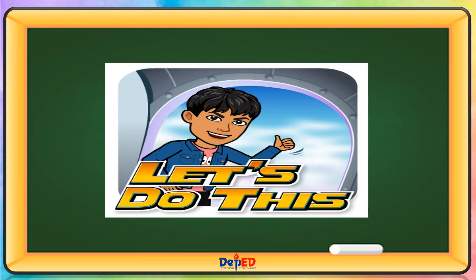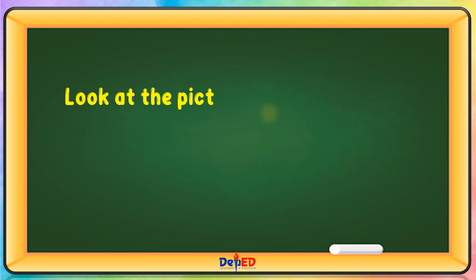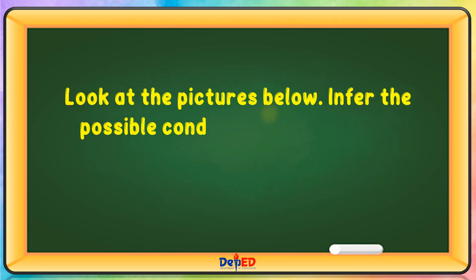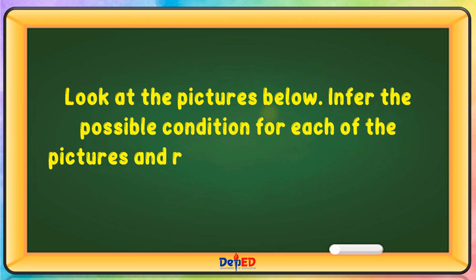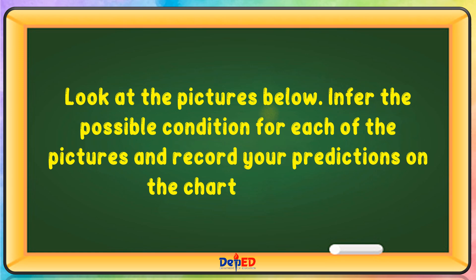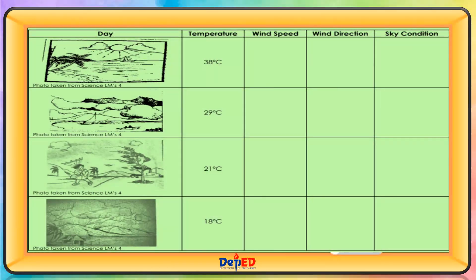Let's do this. Look at the pictures below. Infer the possible condition for each of the pictures and record your predictions on the chart provided. Day 1: temperature, 38 degrees Celsius; wind speed, gentle; wind direction, no exact direction; sky condition, sunny.